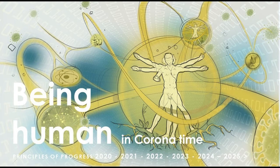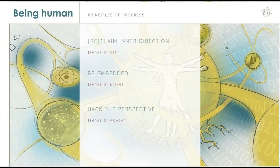In this challenging time frame, you see the words 'principles of progress.' That's the term I use for consumer trends. What do you need to thrive in a world which is so challenging? There are actually three principles of progress. The first one is 'reclaim inner direction' for a sense of self. The second, 'be embedded' for a sense of place. And the third is 'hack the perspective' for a sense of wonder. But before I zoom in on these consumer drivers, I would like to zoom out and look at what is happening in the world.